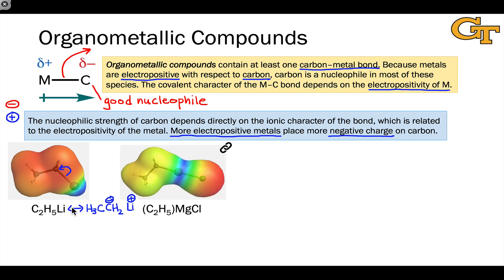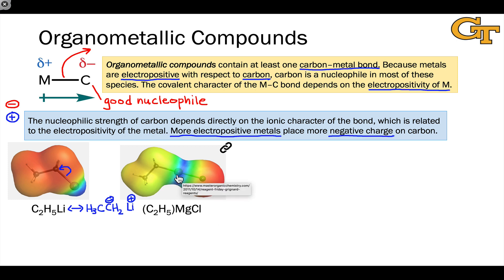When we replace lithium with magnesium, we're stepping to the right on the periodic table and this makes the carbon a little bit less negatively charged. Notice we've gone from a deep red color in the organolithium to something that's more yellow looking in the organomagnesium compound. This is called a Grignard reagent. Notice still, however, that the magnesium atom, positioned between chloride and the organic fragment, is still blue — still positively charged.